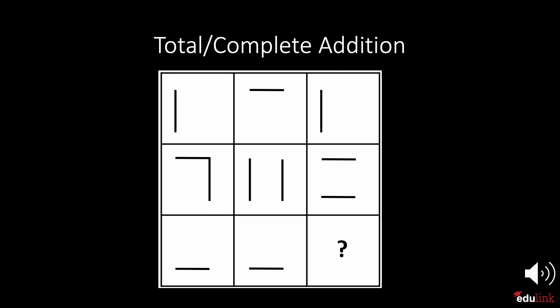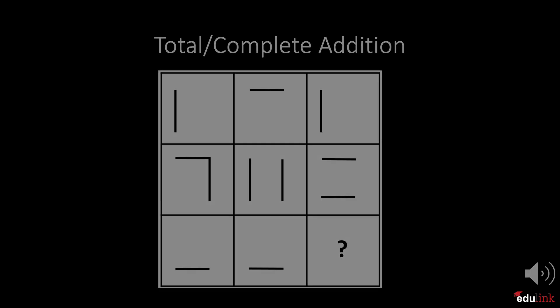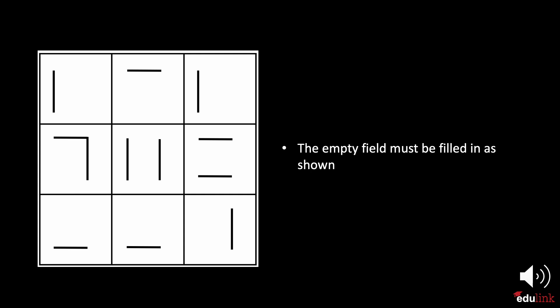Have a look at the first example as provided. In this example, a rectangle is built by going down the boxes in each column. You have to imagine that within each column, the elements from the first, second, and third field are added to one another. Can you complete the missing field in the pattern? The empty field must be filled in as shown.